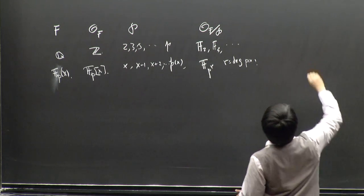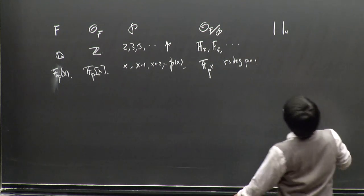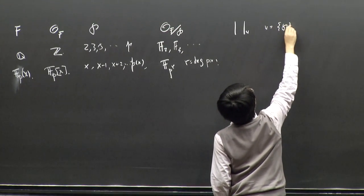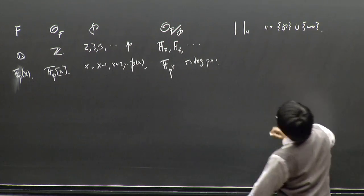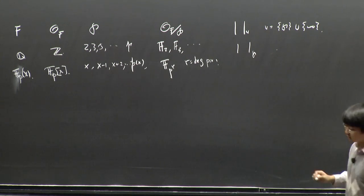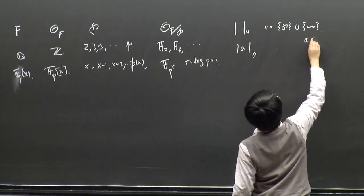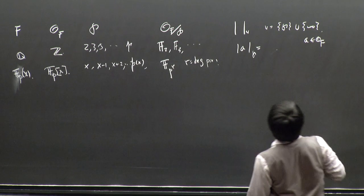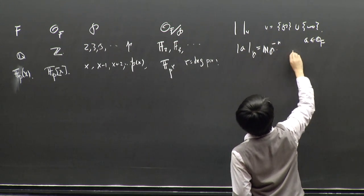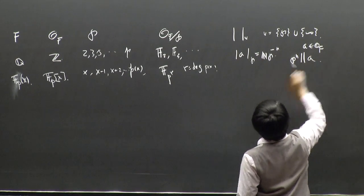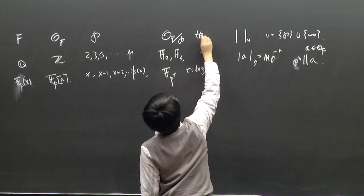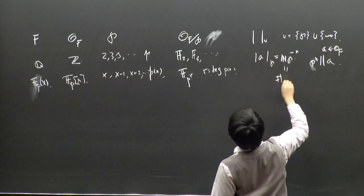For every prime you get an associated absolute value. For example, if you have some A in 𝒪_F, its absolute value is the norm of p to the power −n, where p^n divides A. Here this is just the cardinality of the residue field.